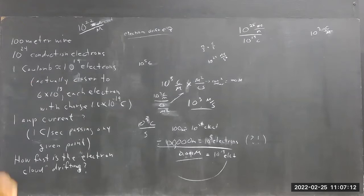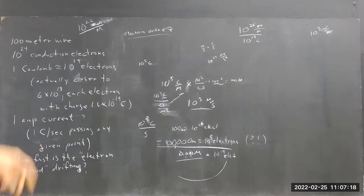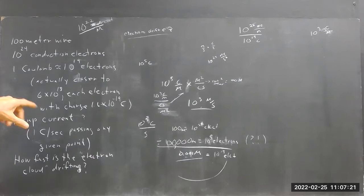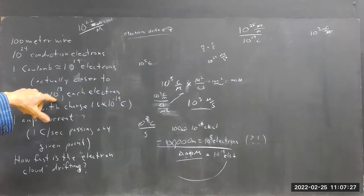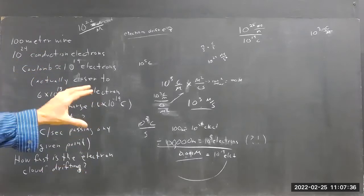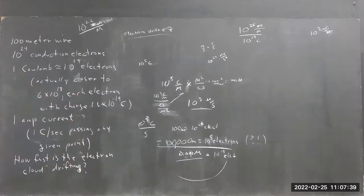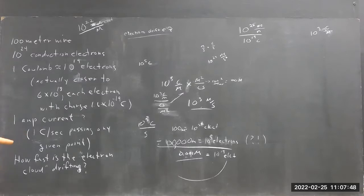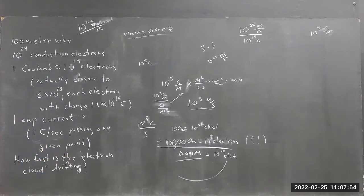One Coulomb is approximately 10 to the 19th electrons — actually it's closer to 6 times 10 to the 18th electrons, but that's close enough to 10 to the 19th to give us a general idea. We could work out the specifics, but there are a lot of things to consider — how thick the wire is, how many of the conduction electrons actually conduct, and so on.